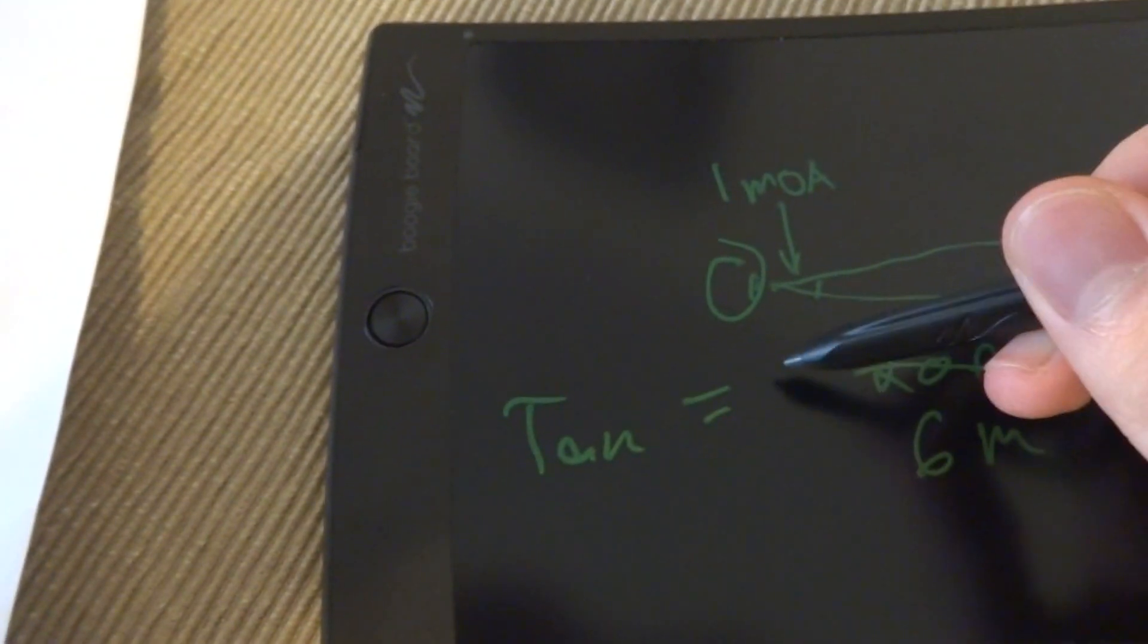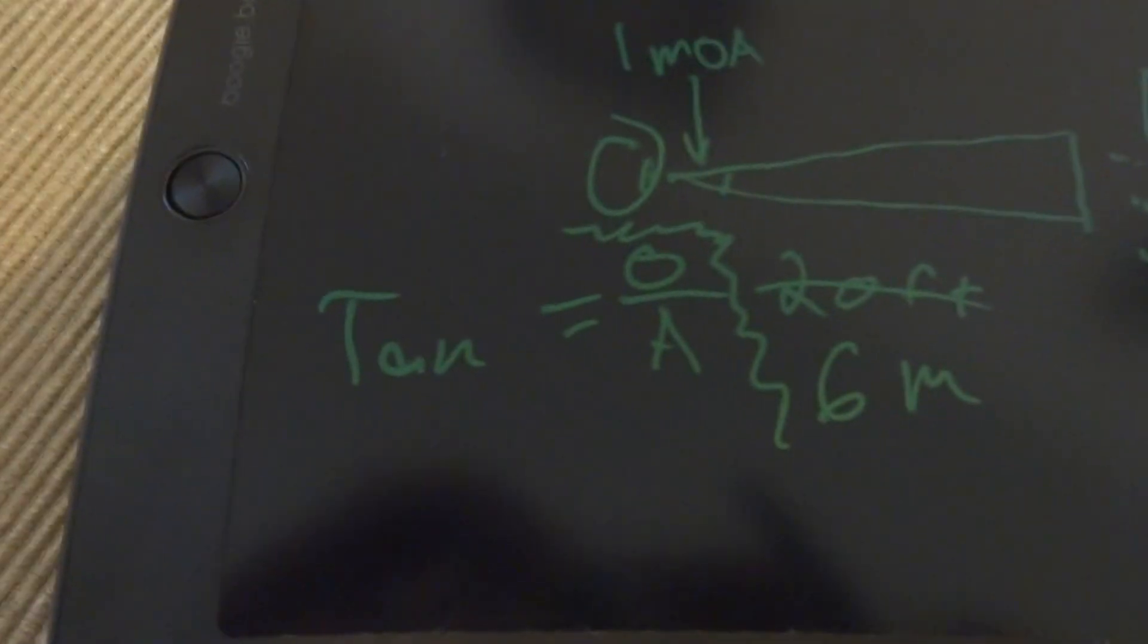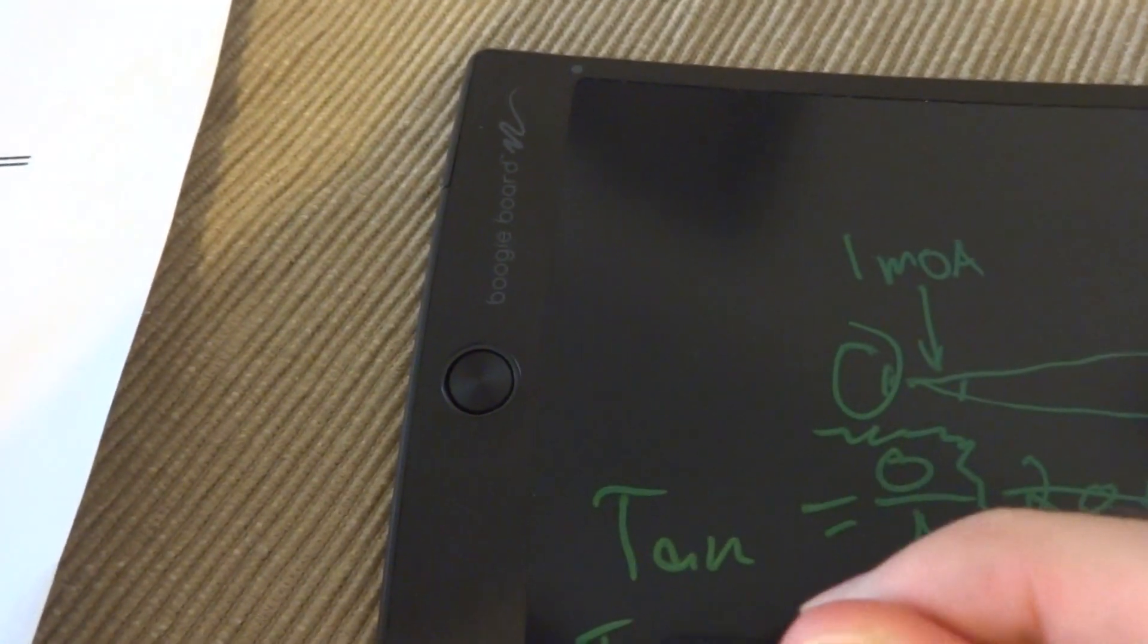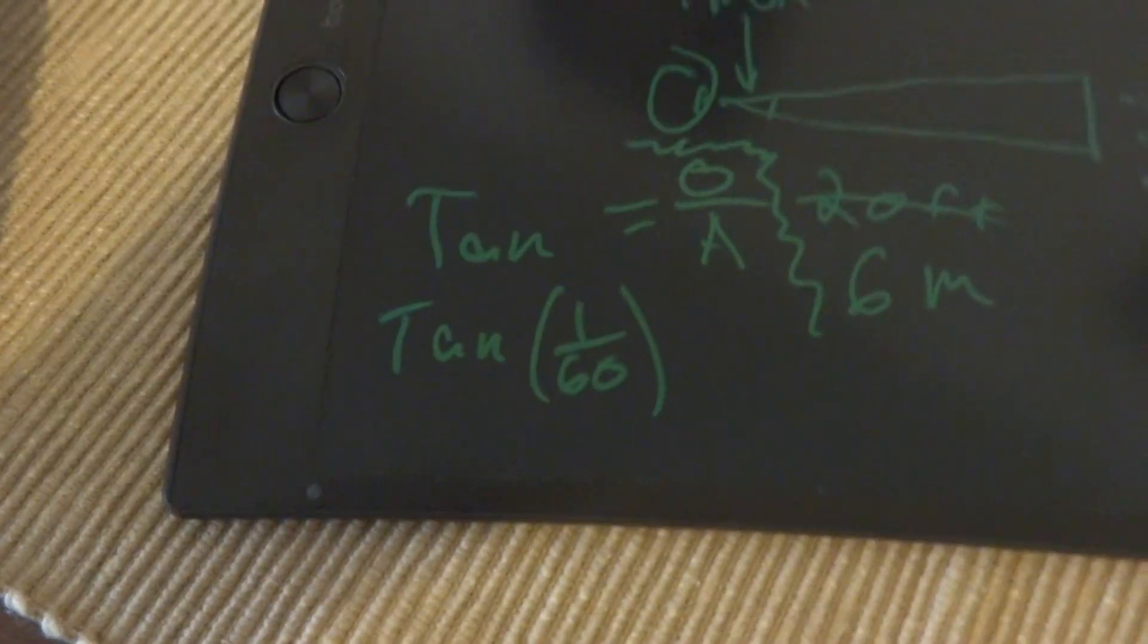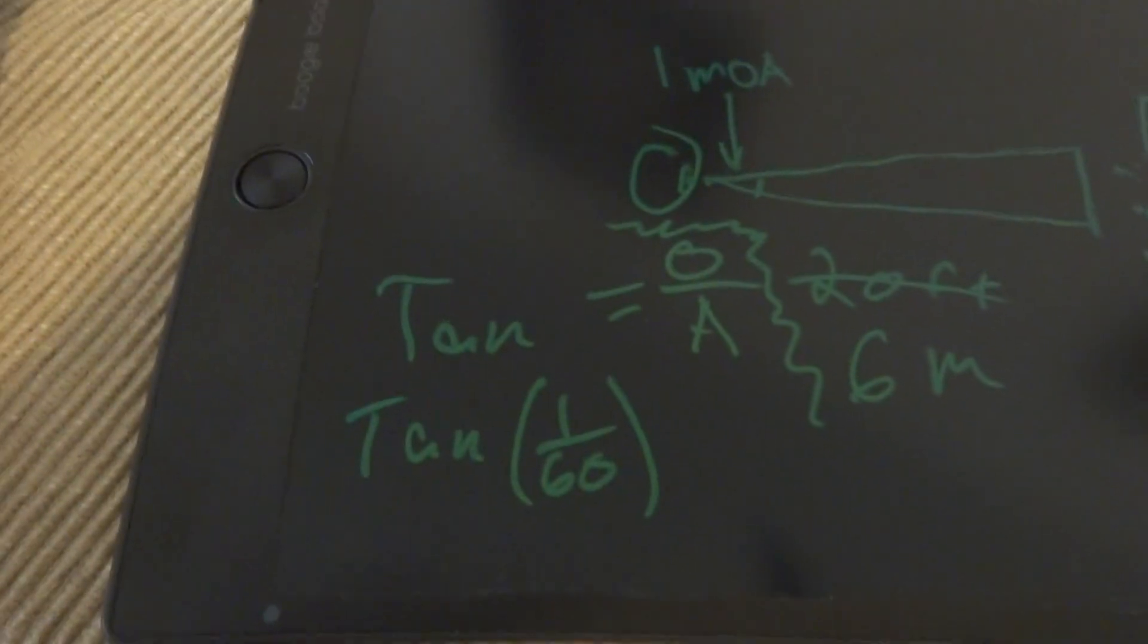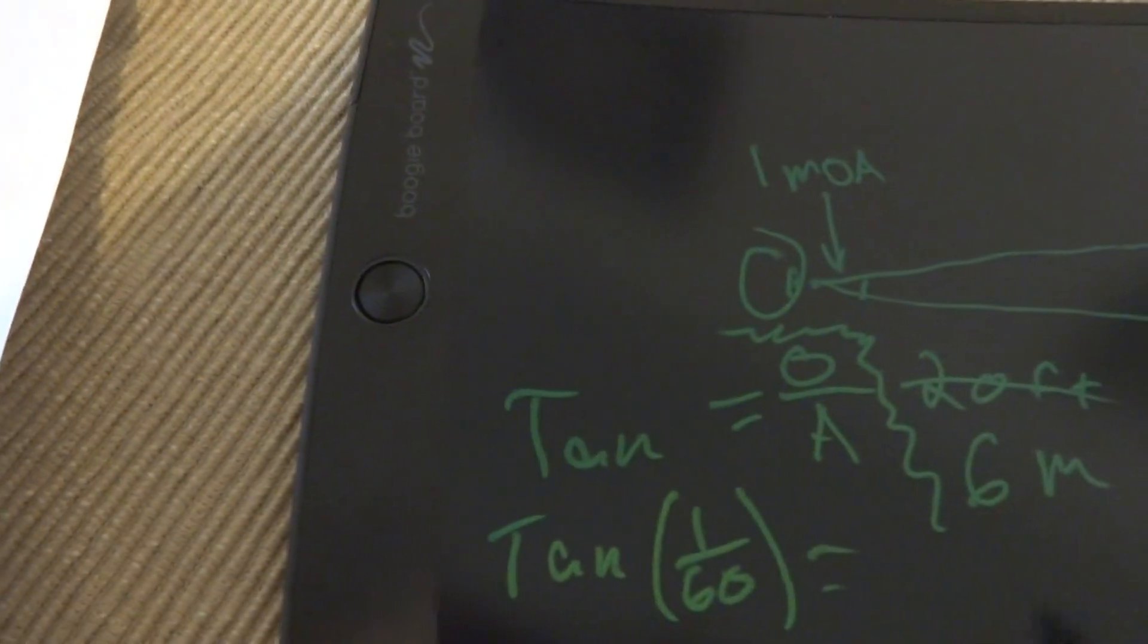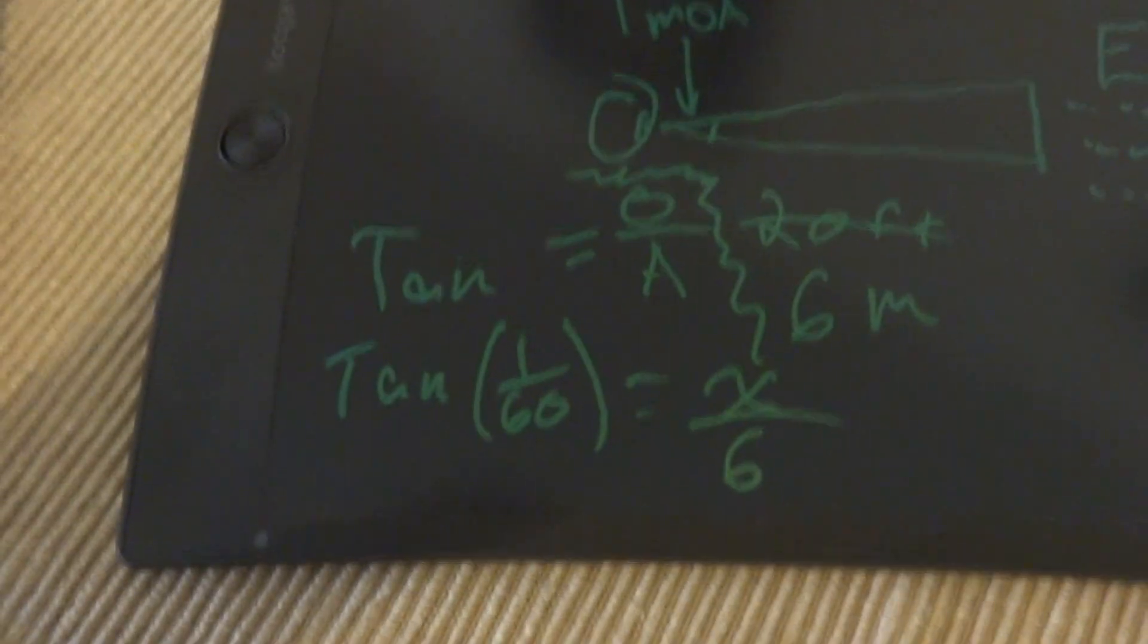So we can express this as a tangent: tangent equals opposite over adjacent. So we know the minute of angle is one, so we can express this as tangent 1/60th, because there's 60 minutes in every angle. And then that's going to be equal to the opposite, which we don't know, so we'll put an x over adjacent, which is 6, because we're going to do this in meters to make it easy.